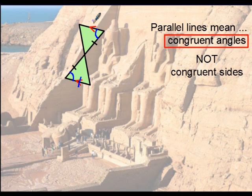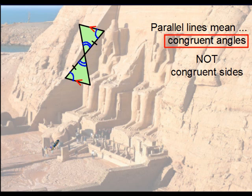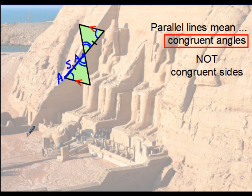We don't know that the parallel sides are congruent — it's not marked, and parallel does not necessarily mean the same length. But we do have those two equal alternate interior angles, and we also have vertical angles in the middle. That gives us three parts in each triangle: an angle, a side, and an angle, with the side connecting one angle to the other — so it's included. That's what allows us to say ASA.